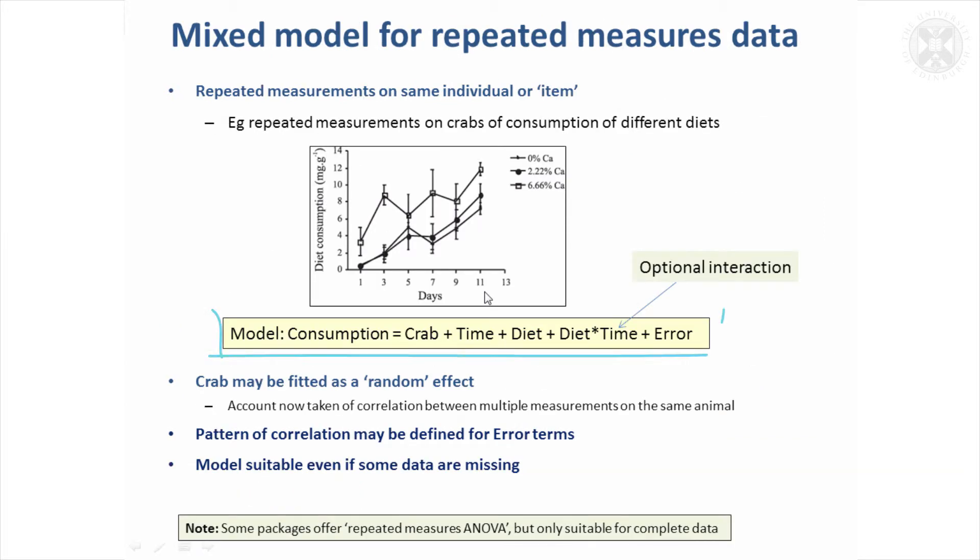So the model would look something like this with an optional interaction for that crab data, but you would definitely want to fit in a mixed model crab as a random effect. It also offers the option of having a pattern of correlation defined for the error terms.